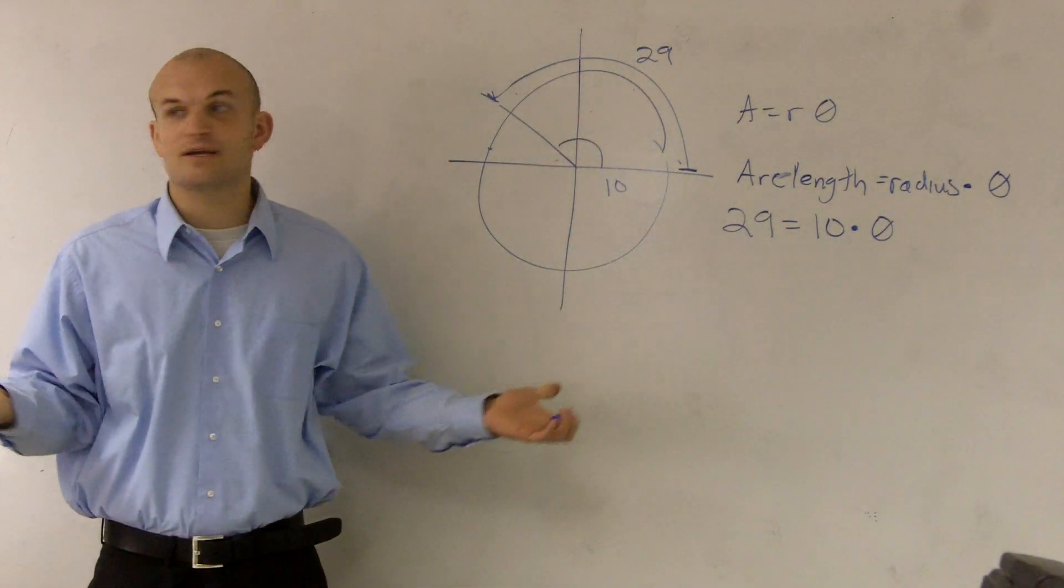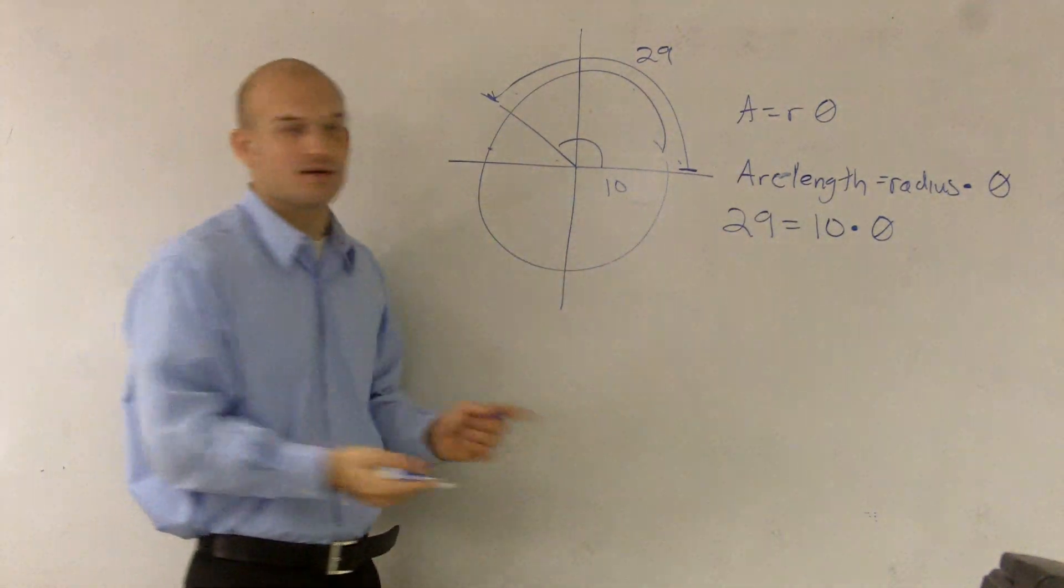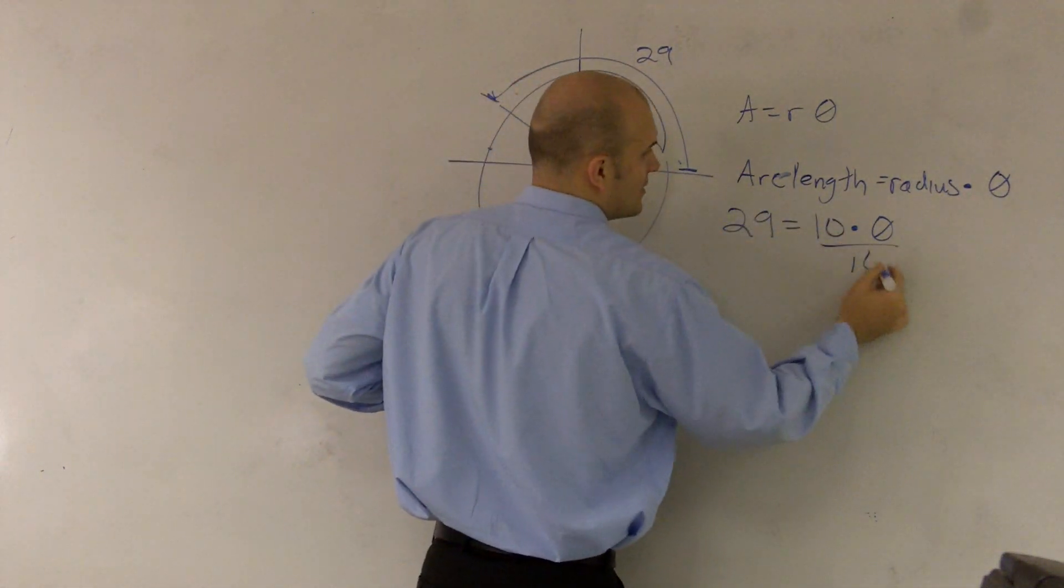So just like you do for any other equations, when you have an unknown or variable, you need to solve for it. So since it's multiplying by 10, just divide by 10.